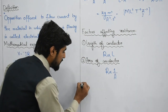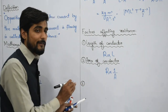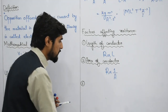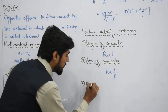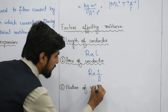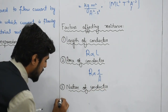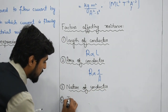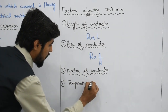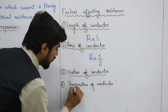The third factor is the nature of the material — whether the material is a conductor, insulator, etc. We will discuss resistivity related to this in the later part of this lecture. The fourth factor on which resistance depends is the temperature of the conductor or of the material in which the current is flowing.